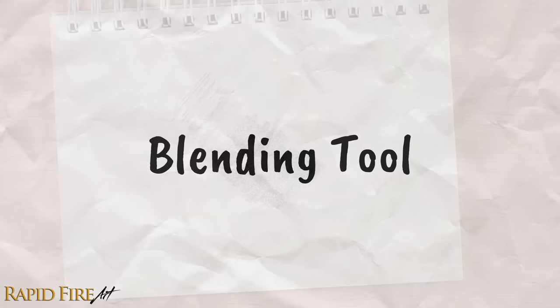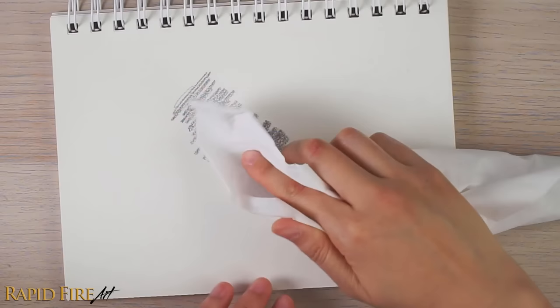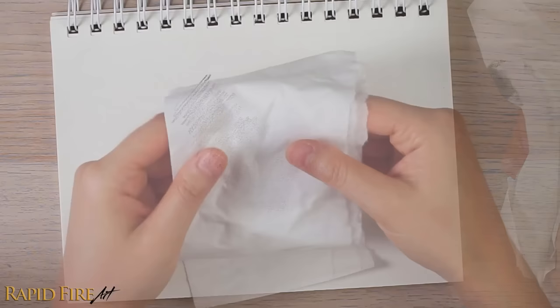To get your shading to look really smooth, you'll want a blending tool. That can be a Q-tip, soft tissue paper, or even toilet paper.